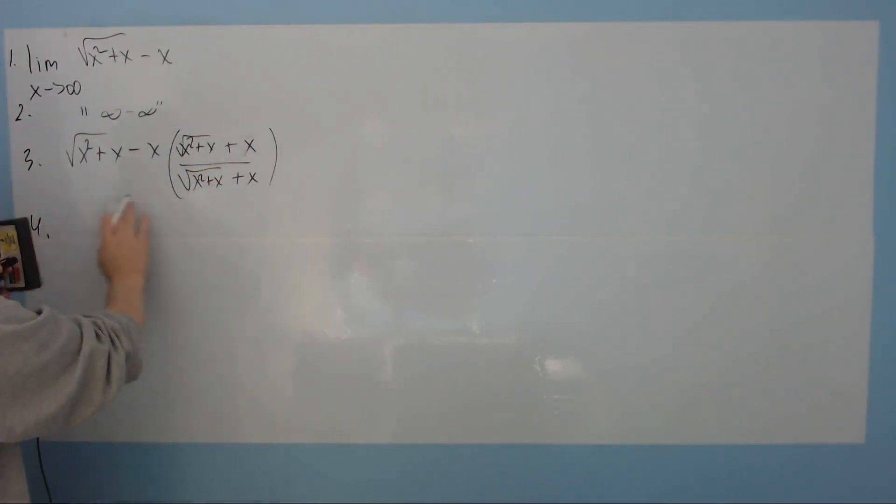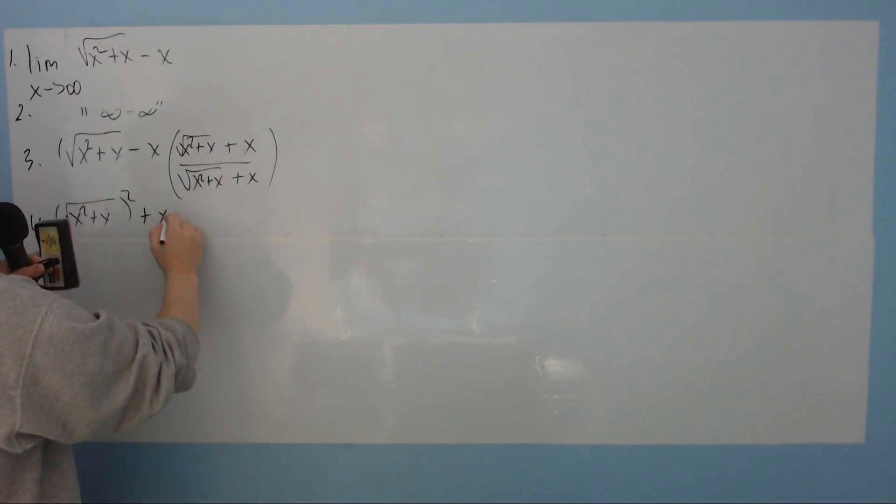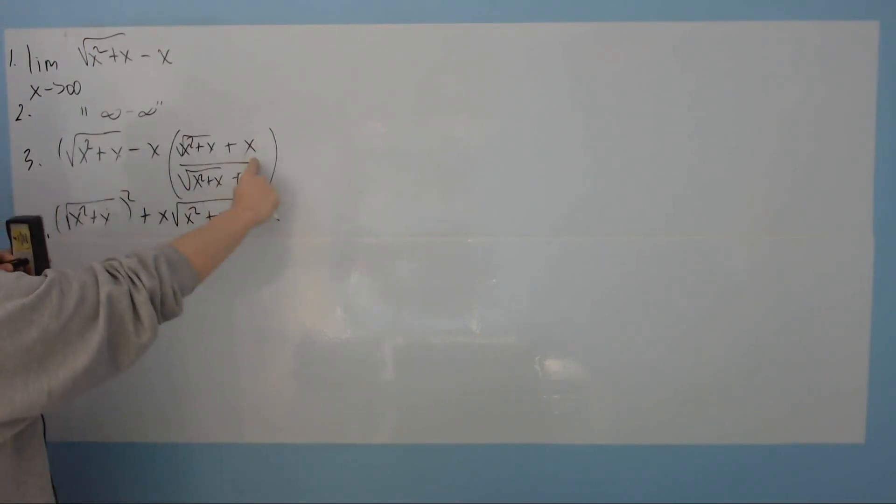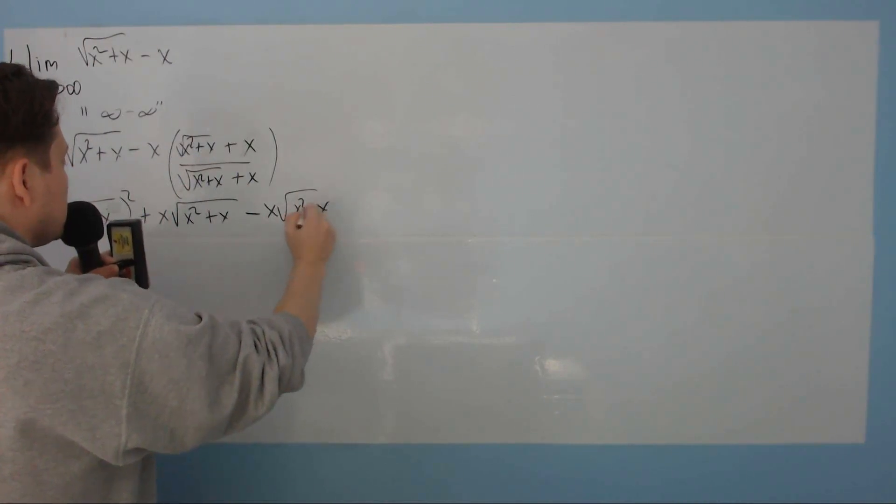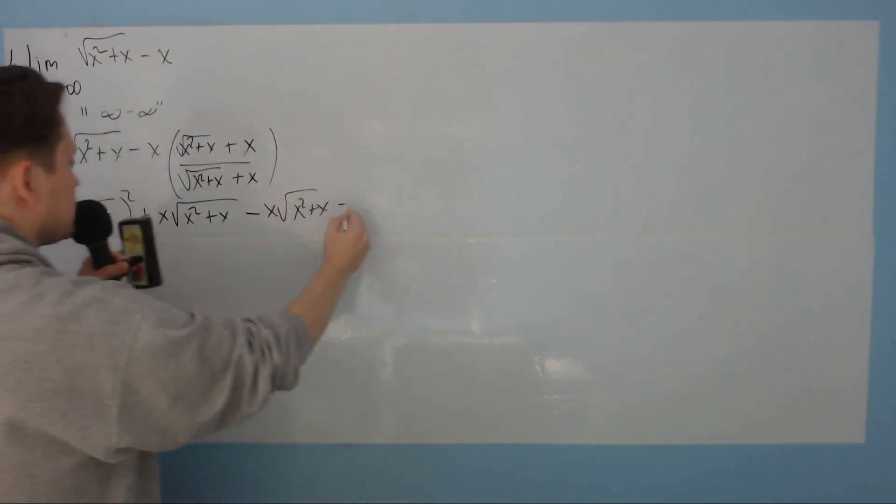Now you multiply this out. So on the top, you basically foil. You're going to do this piece times that piece. That's going to give you this quantity squared. Then you multiply this times the positive x. So that's going to give you plus x times square root of x squared plus x. Then I subtract, minus x times square root of x squared plus x. And then at the end, I'm going to do negative x times positive x. So it's going to give me minus x squared.